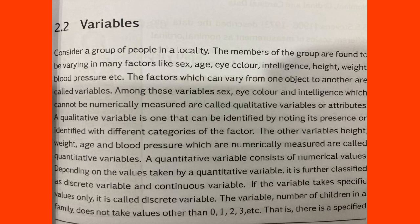Quantitative variables — that is height, weight, age — we need to numerically measure. Eye color, intelligence, beauty — in these variables, we need to do quality variables. The variable which can be numerically measured is called a quantitative variable, and the variable which cannot be numerically measured is called a qualitative variable.